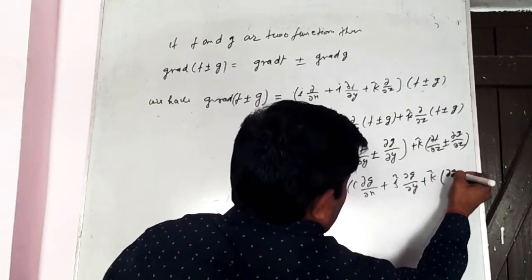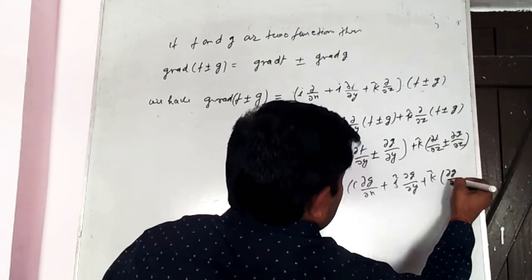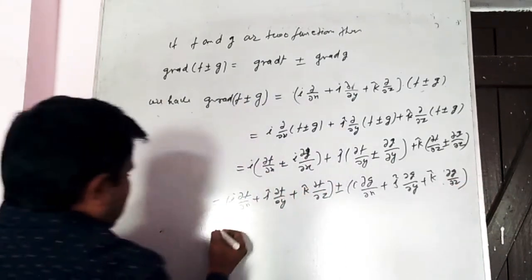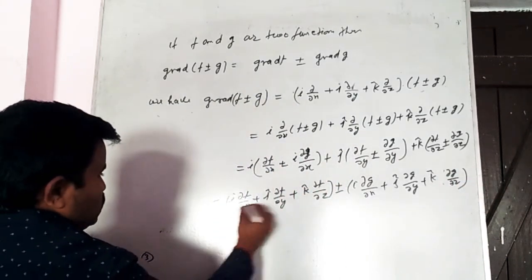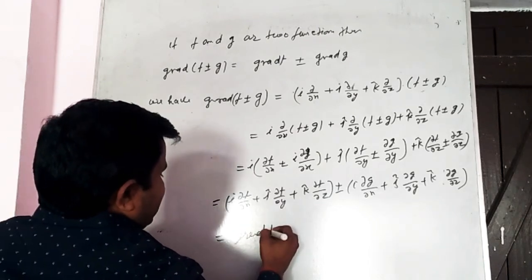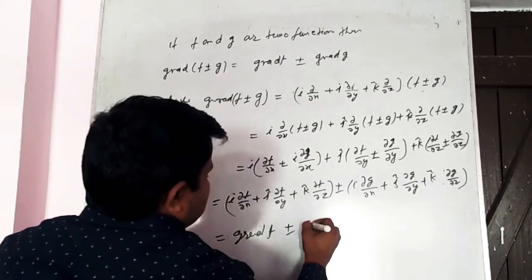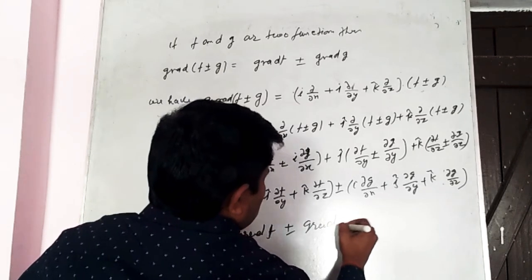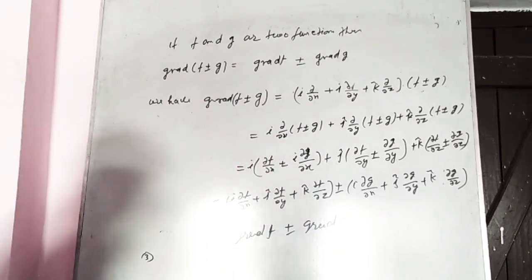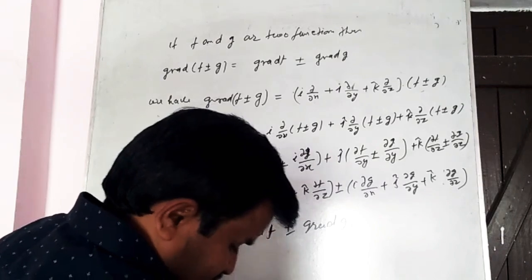Grouping: (i ∂f/∂x + j ∂f/∂y + k ∂f/∂z) ± (i ∂g/∂x + j ∂g/∂y + k ∂g/∂z). So we can represent this as grad f ± grad g. That completes property one.